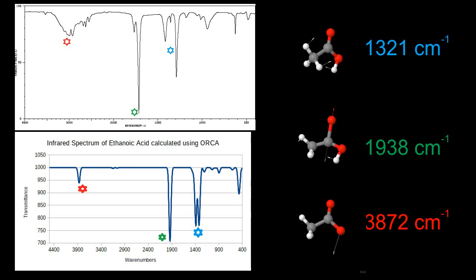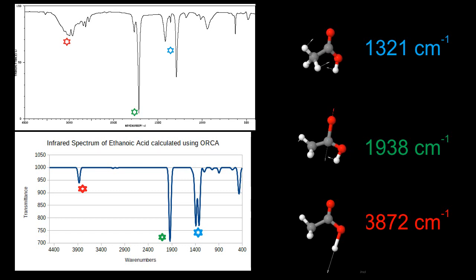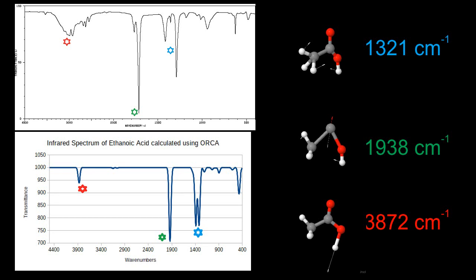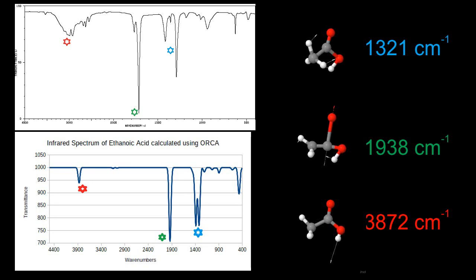Try this out yourself on some molecules using your home computers. What happens to the infrared spectrum when you change the structure of the molecule? Use the tools I've taught you so far to do a few investigations of your own — maybe compare carboxylic acids to ketones or aldehydes. Until next time!